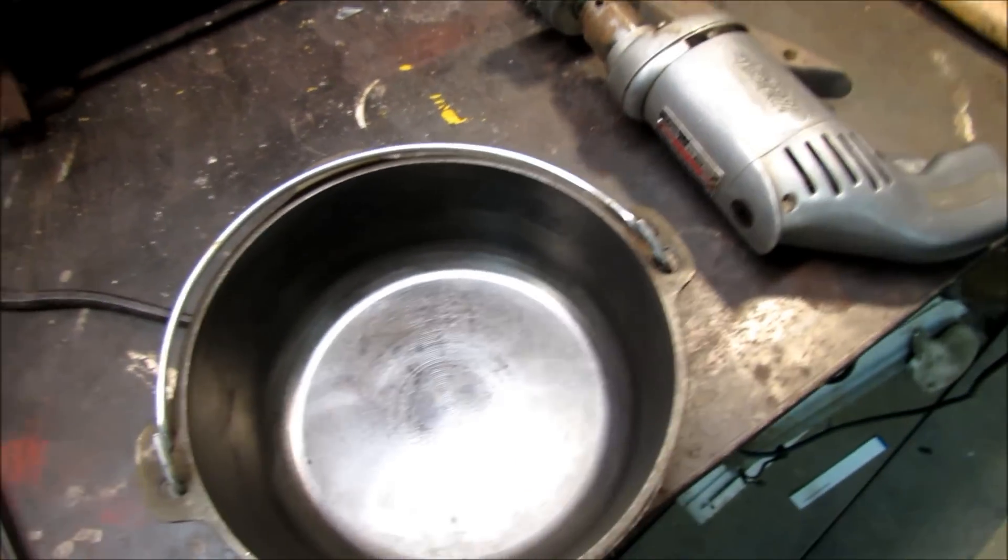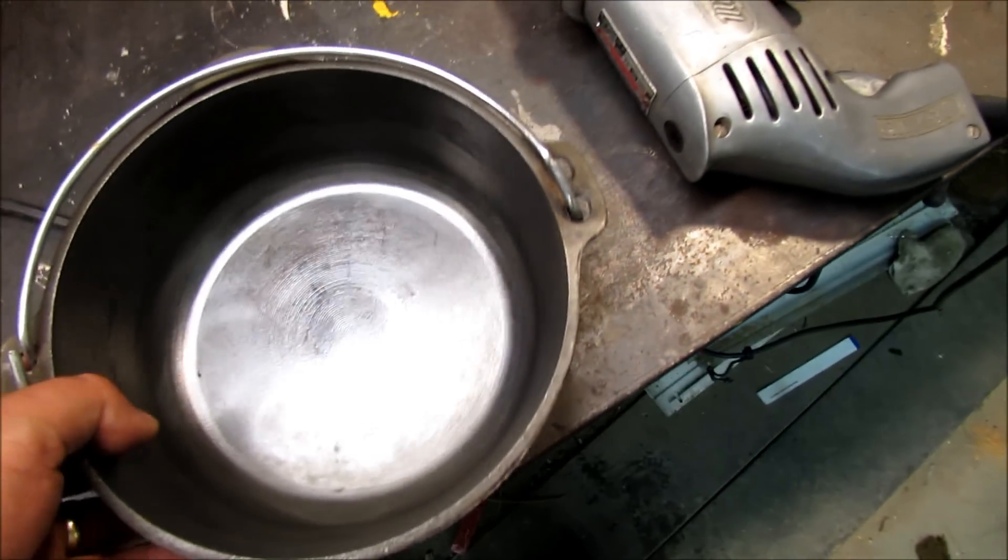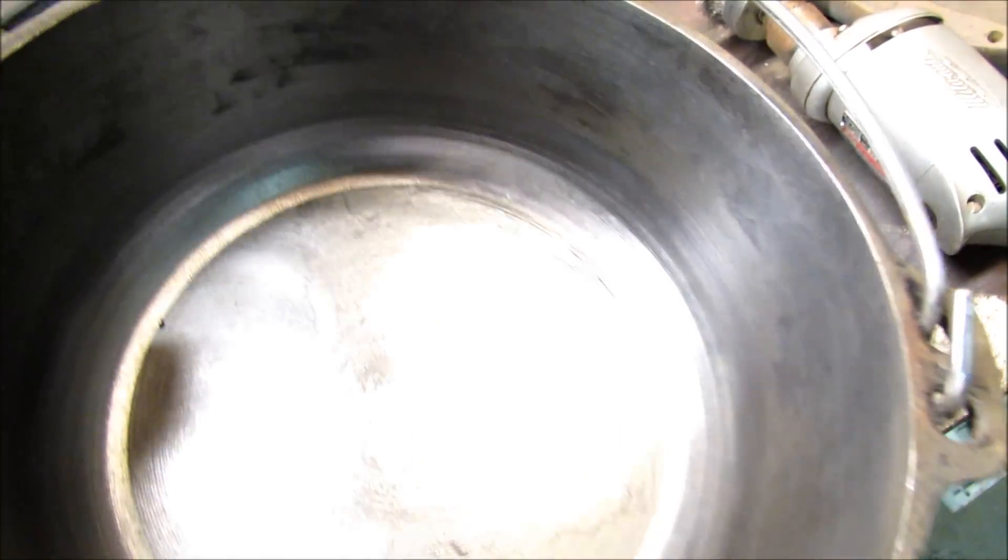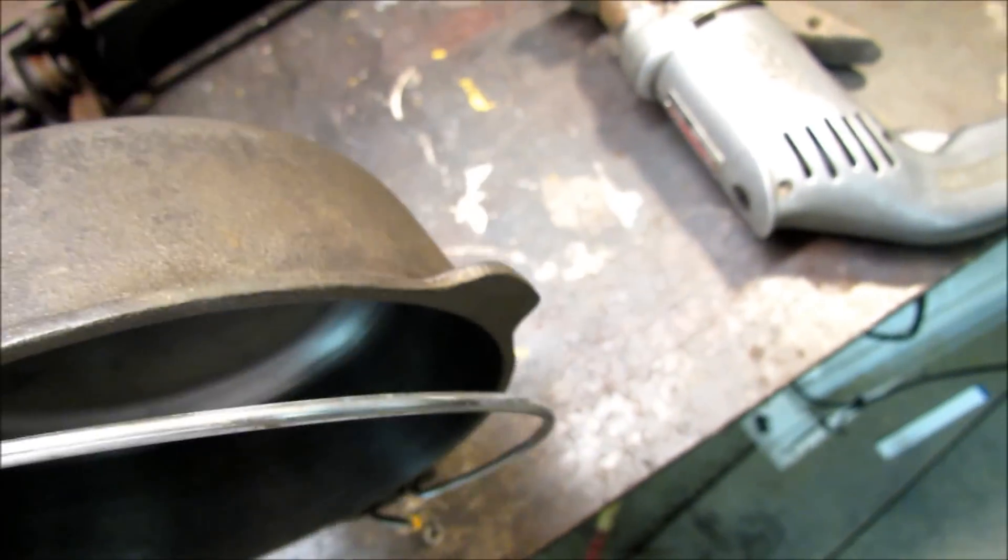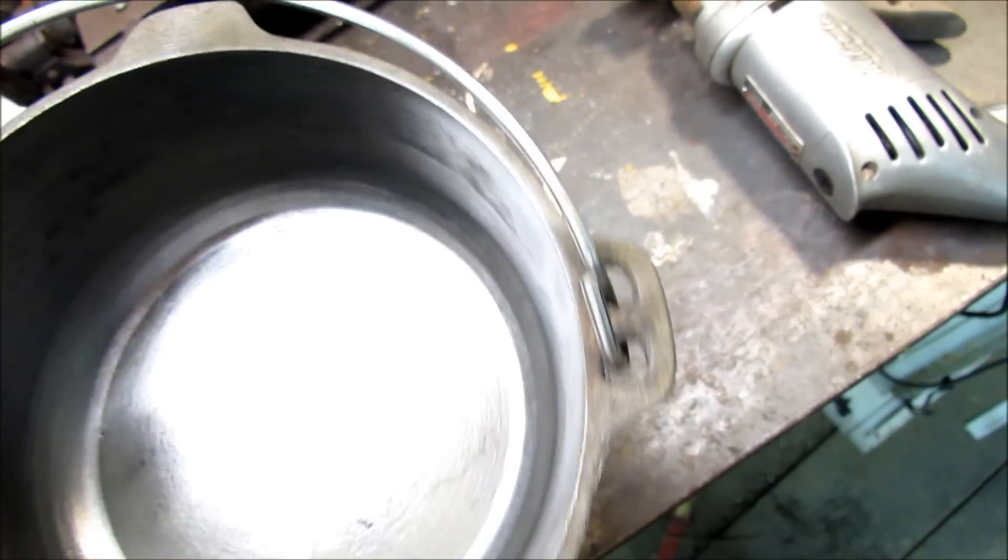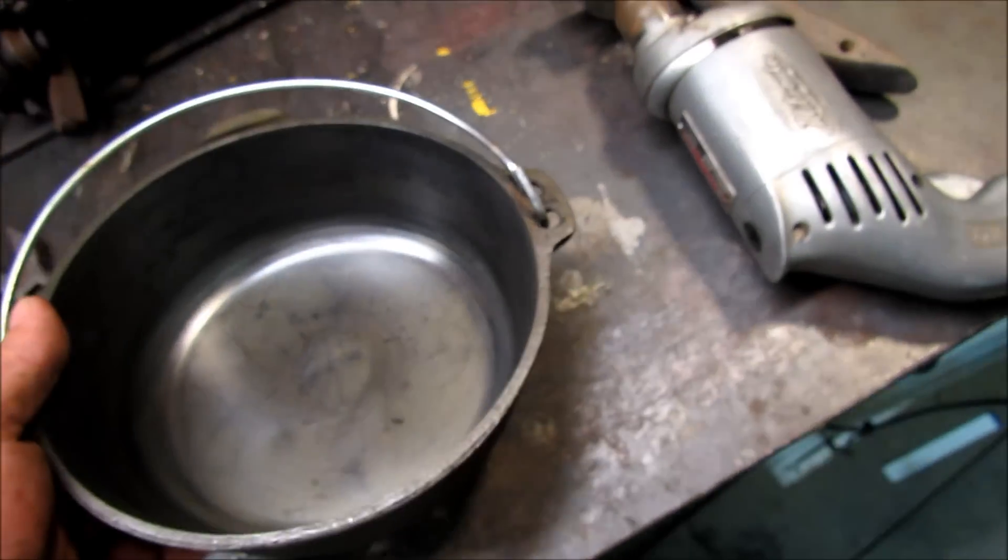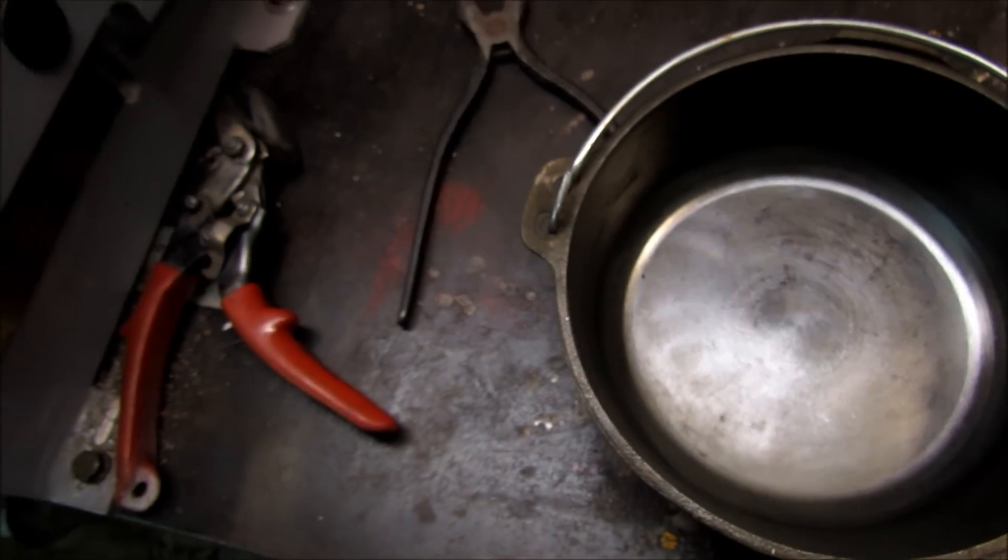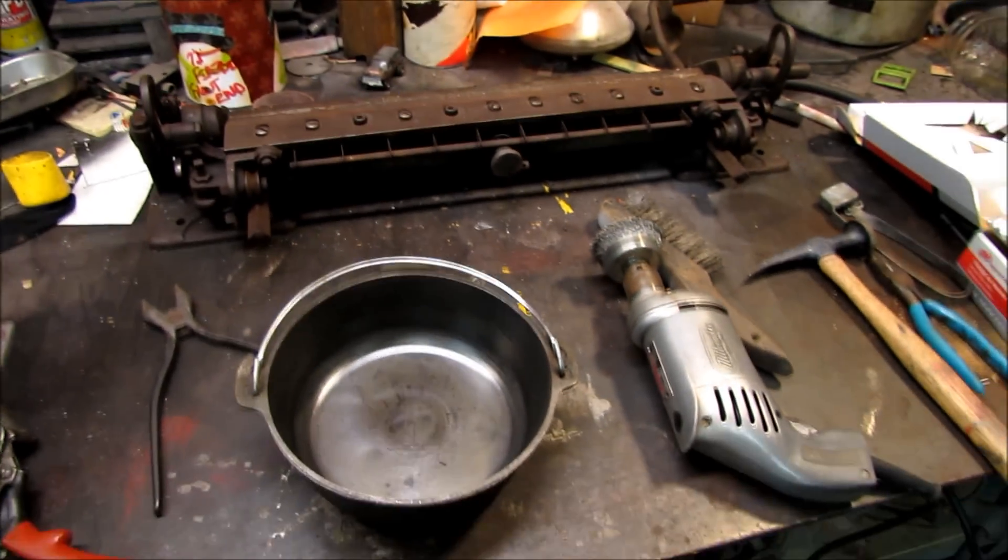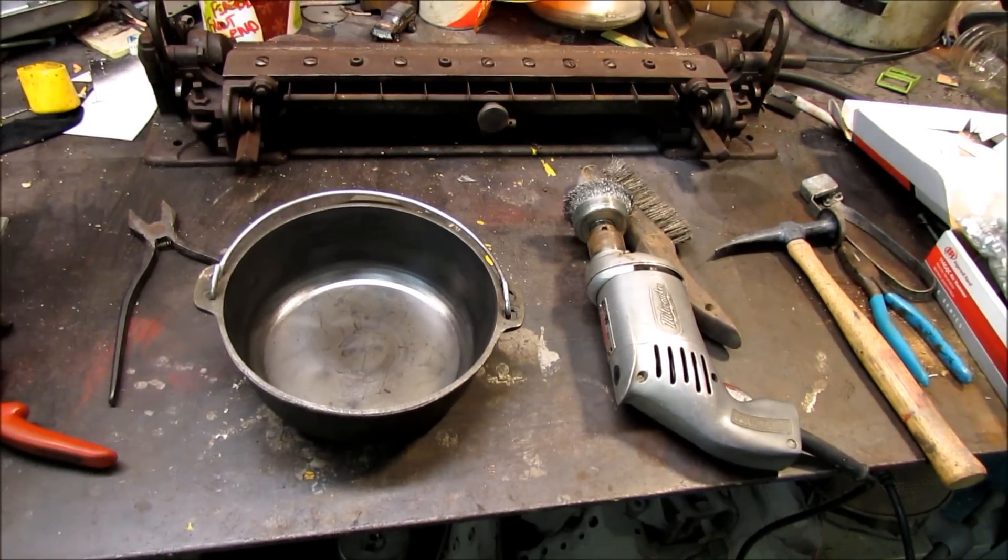Alright, I got it pretty clean with the wire wheel. It took me about a minute and a half. The outside cleaned up good. Now it's ready to season, whatever manner you choose to use. I do mine over a wood fire. That's it for now. See ya.